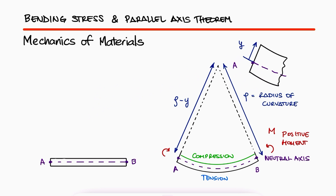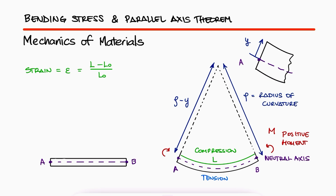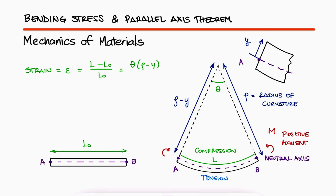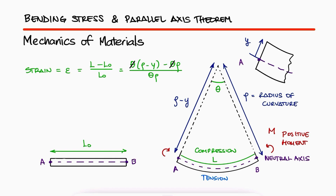The strain for the length that is compressed at the top would be the change of length over the original length. The compressed length would be the length of an arc with angle theta and radius rho minus y. Remember that arc lengths can be calculated by multiplying the radius times the angle in radians. The original length L0 is the distance from A to B either in the undeformed or the deformed beam, since the neutral axis doesn't stretch or compress. So if we're looking at the deformed beam, it would also be the length of the arc for the radius that goes up to the neutral axis, meaning rho. Thetas cancel out and rho's cancel out in the numerator, giving us a strain of minus y over rho.